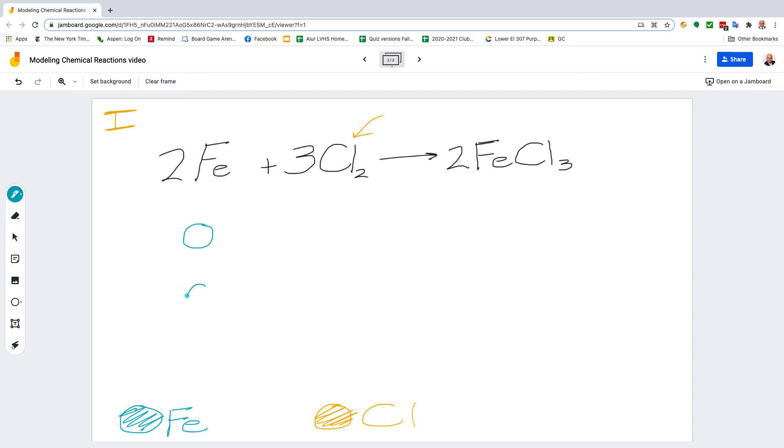They are not together—this is saying there's two of Fe. Then it says there's three of Cl2, so as you draw a Cl2 bonded together, because of the coefficients we say there's three of them—three Cl2's.